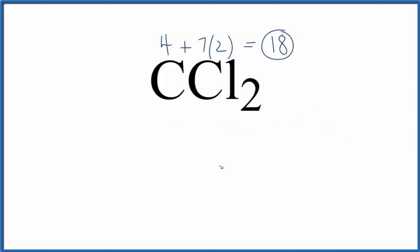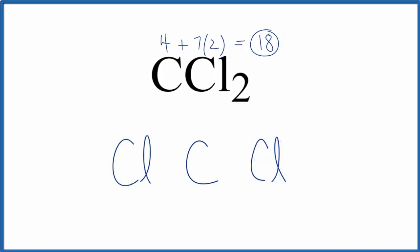We'll put the least electronegative element in the center—that's the carbon, with a chlorine on either side. First, we'll put a pair of electrons between the atoms to form the chemical bond. Then we'll complete the octets around the chlorine atoms.